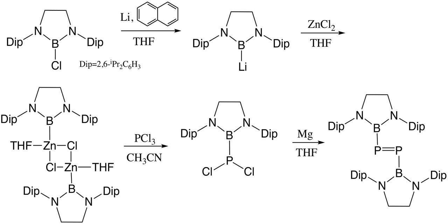Diphosphene is inert to ground-state oxygen but can be oxidized by triplet oxygen to give a mixture of phosphine oxides and hydroxybenzophosphol oxide. Compared to oxygen-involved oxidation, reaction of diphosphene with ozone is much more rapid and indicates a 2:1 ozone-to-diphosphene stoichiometry. Ozonolysis of bis(tris(trimethylsilyl)methyl)diphosphene (Tsi₂P₂) gives acyclic diphosphoxides.